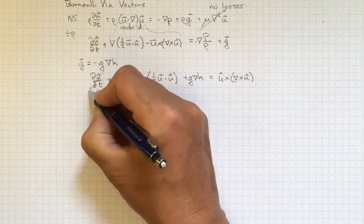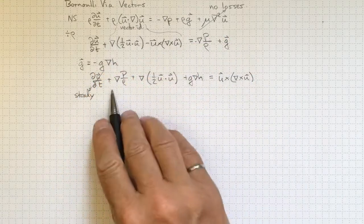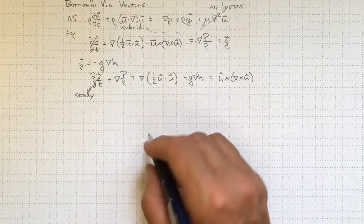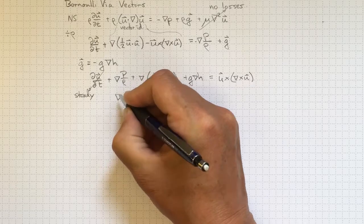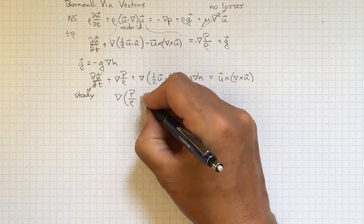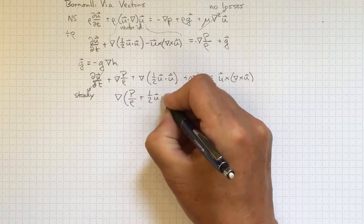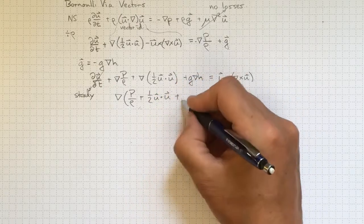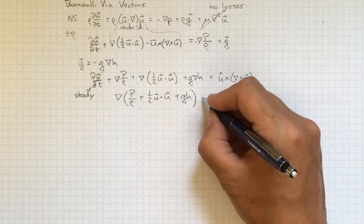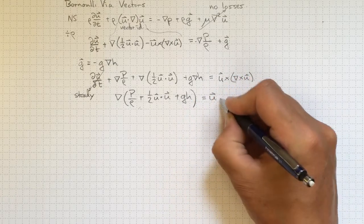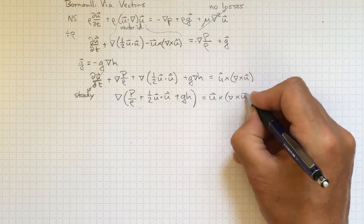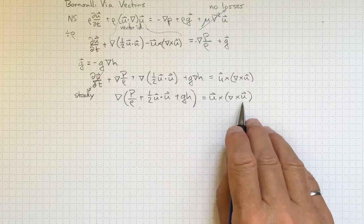Now if this is a steady flow, then the time derivative will drop out, and we'll be left only with these terms. We've got the gradient operator here in all of these, so we could take that all together as the gradient, p over rho, plus a half u dot u, plus g h. And that'll all still be equal to that, u cross grad cross u.